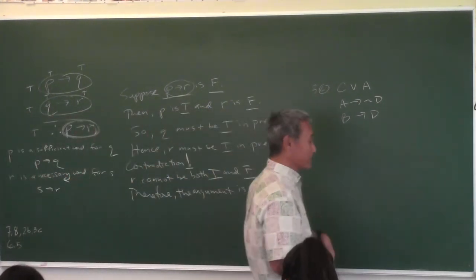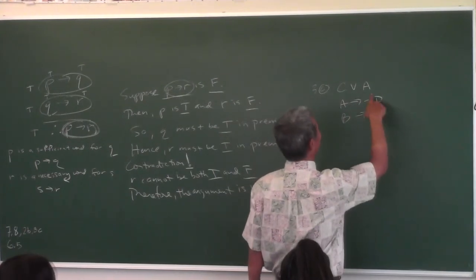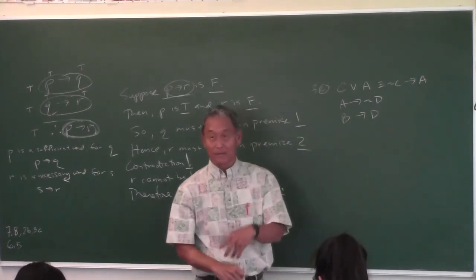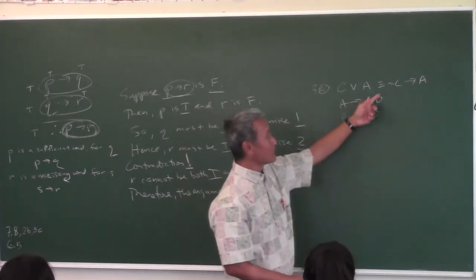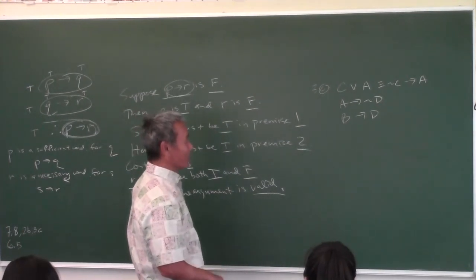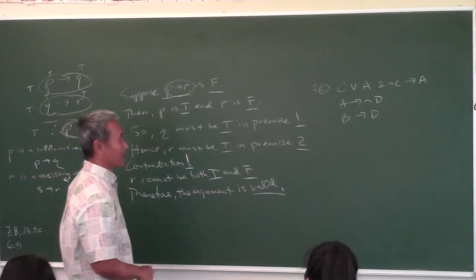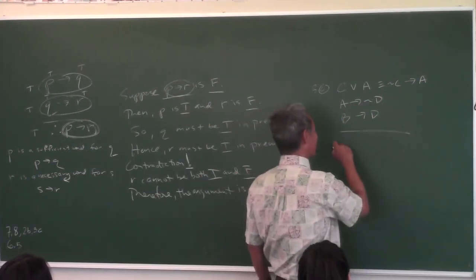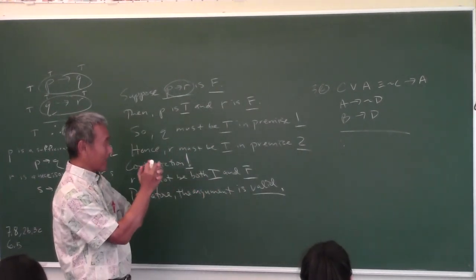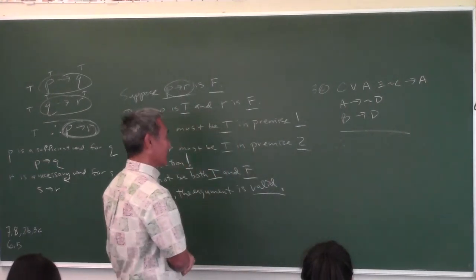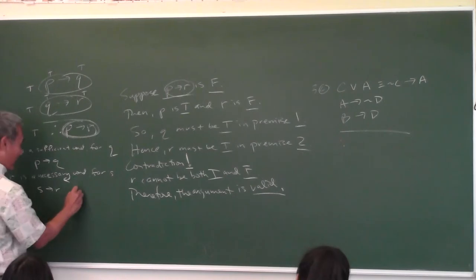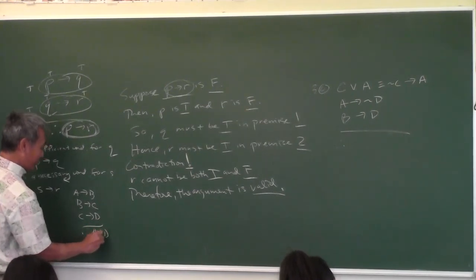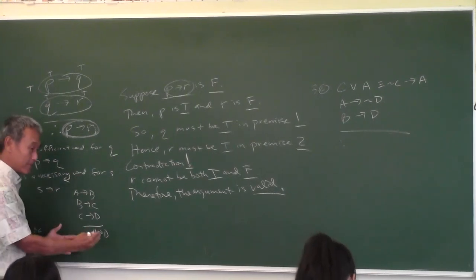The key to doing these arguments is you want to change everything to conditional statements. The only one that's not conditional is the or-statement. Can I change an or-statement to a conditional? Yes — negate the first, leave the second one alone. If you don't know this one, you might lose between 16 and 24 points on the test. Now I have three conditional statements — what can I conclude? It's going to be another conditional because we're going to use the law of syllogism. Like A implies B, B implies C, C implies D — what can I conclude? A implies D.